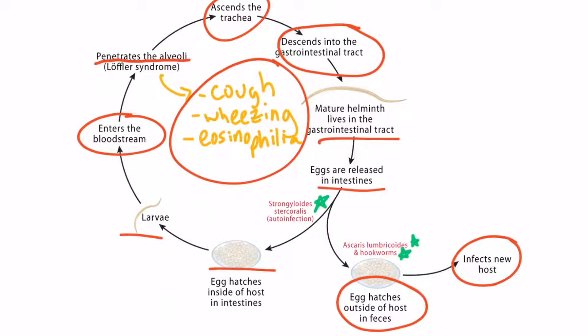However, in the case of Strongyloides, the eggs hatch inside of the host within the intestines, which can result in repetition of the cycle. We'll discuss this in more detail when we cover Strongyloides. For now, it's most important for you to know that Ascaris lumbricoides can cause Loeffler syndrome and to be familiar with the general life cycle of the parasite, as we've just discussed.